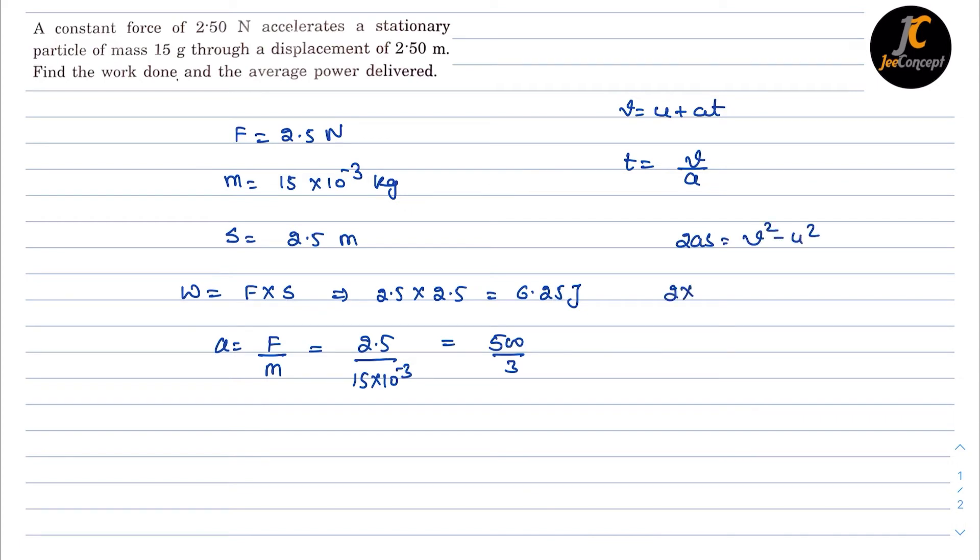Now 2 into acceleration is 500 by 3 into displacement is 2.5 and initial velocity was zero, so final velocity will be V squared. Now this will become V equals 50 by root 3.